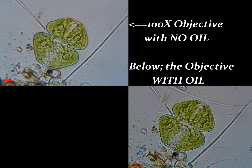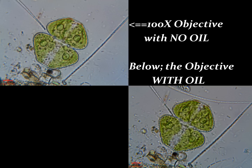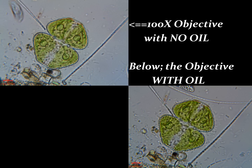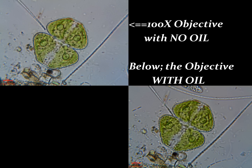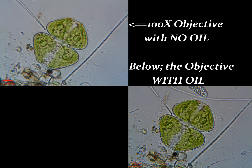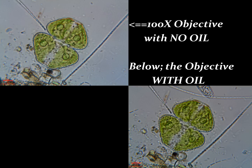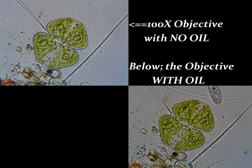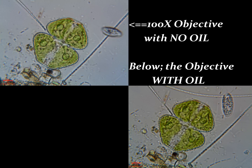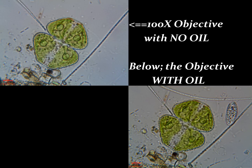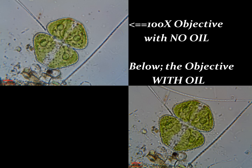Have you ever wondered what would happen if you did not use oil on your oil immersion objective? Here's the difference: upper left, 100 power objective, no oil used; lower right, same objective, same algae cell. Now we're using oil. Clearly there's a difference in resolution, sharpness, clarity, and color saturation.